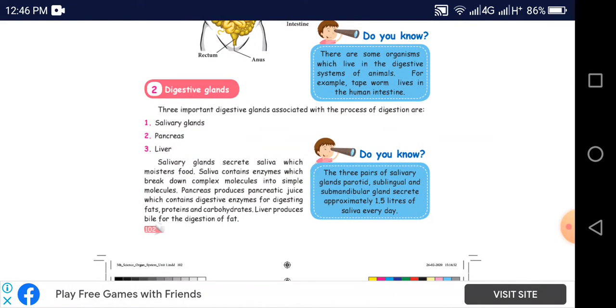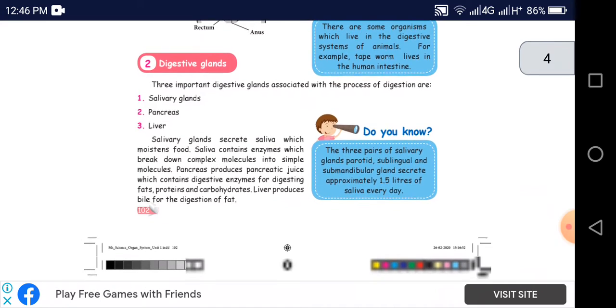There are three important digestive glands associated with the digestion: salivary gland, pancreas, and liver.